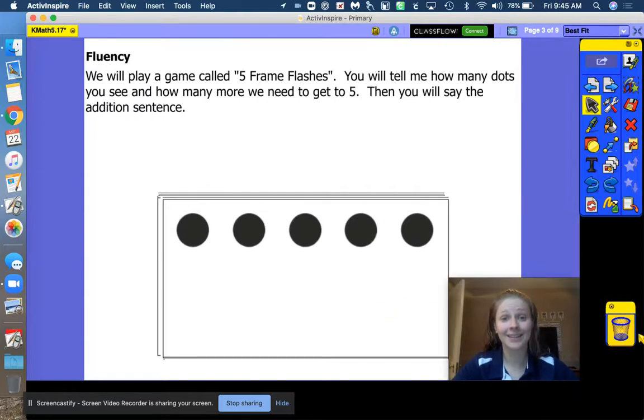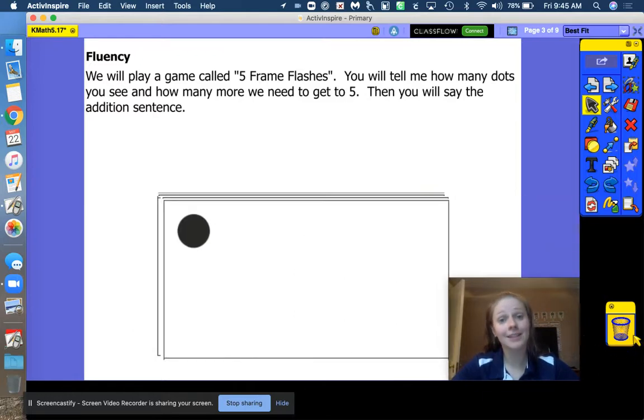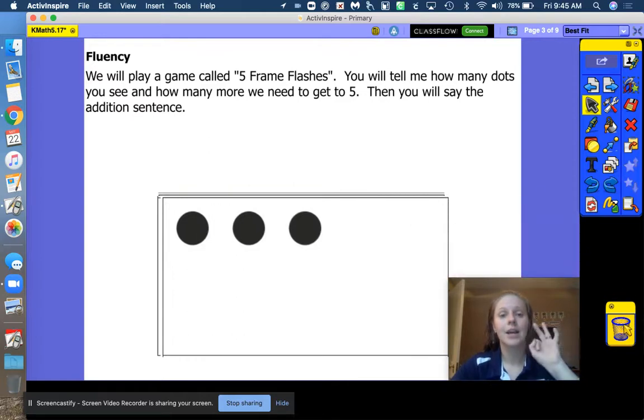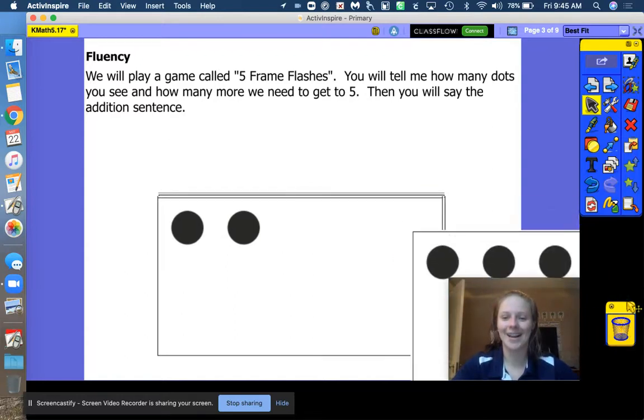How many dots? Five. How many spaces? Zero. What do we say? Five plus zero equals five. How many dots? One. How many spaces? Four. Show me those fingers. One plus four equals five. Good. Last one, friends. How many dots? Three. How many spaces? Two. Three plus two equals five. Well done.